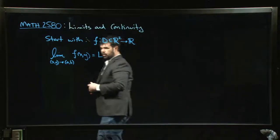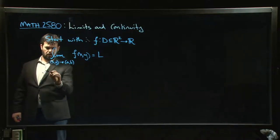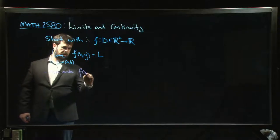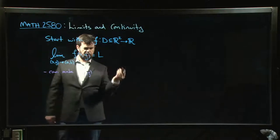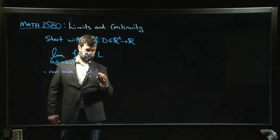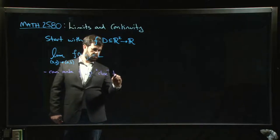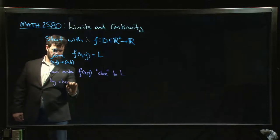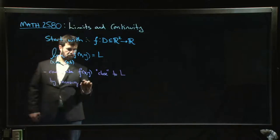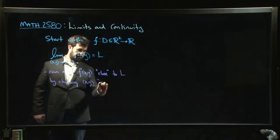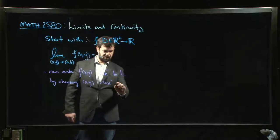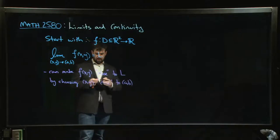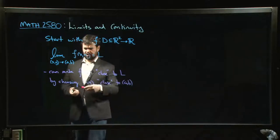Let's try to unpack what this means. This means that we can make f(x, y) arbitrarily close — close to L — by choosing the point (x, y) close to the point (a, b). We usually say 'sufficiently close.'